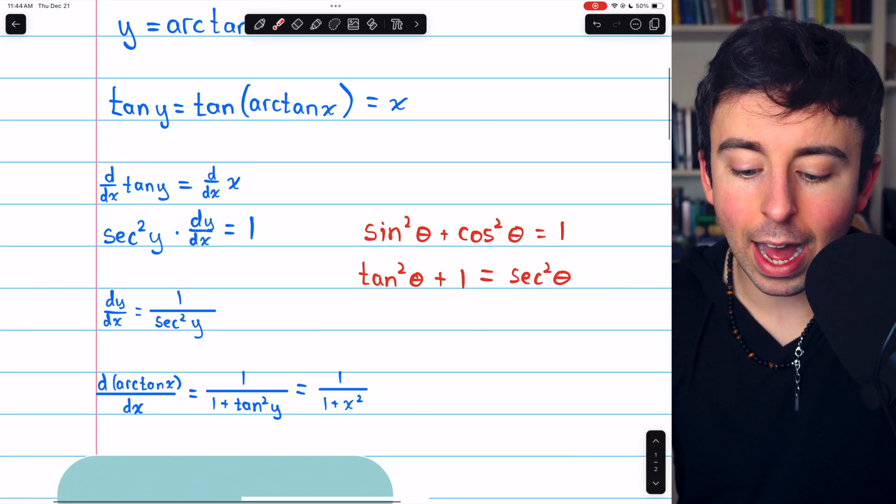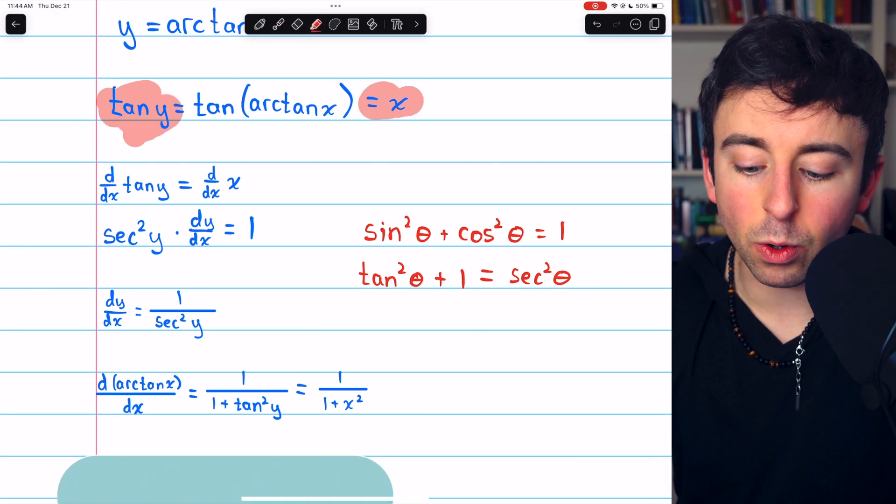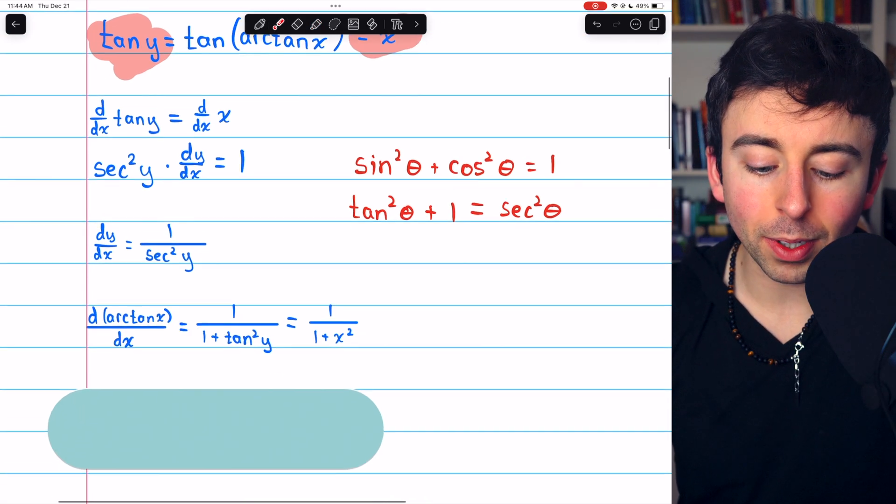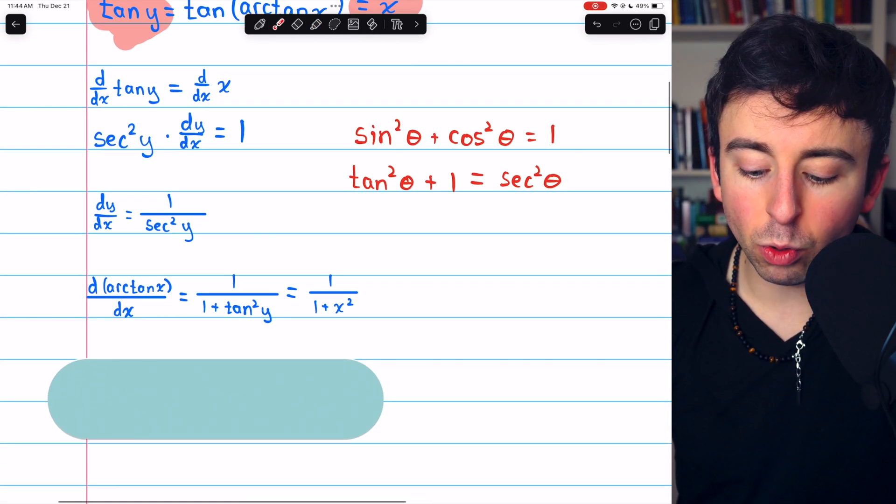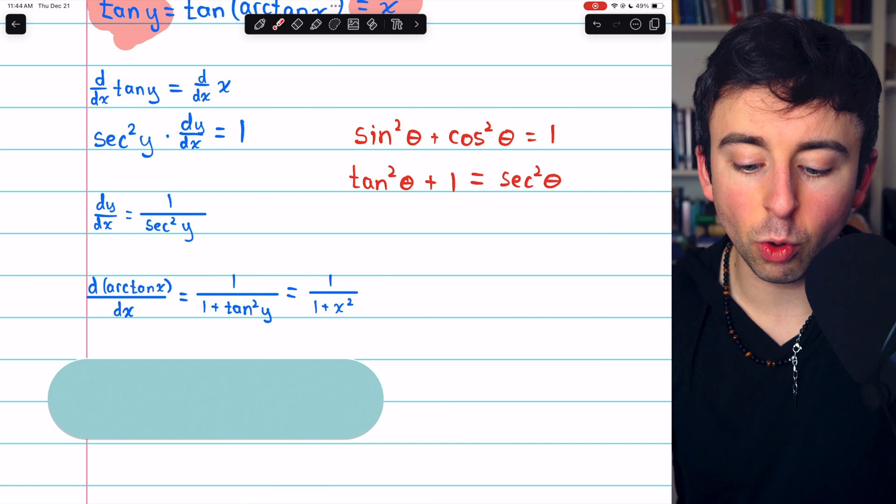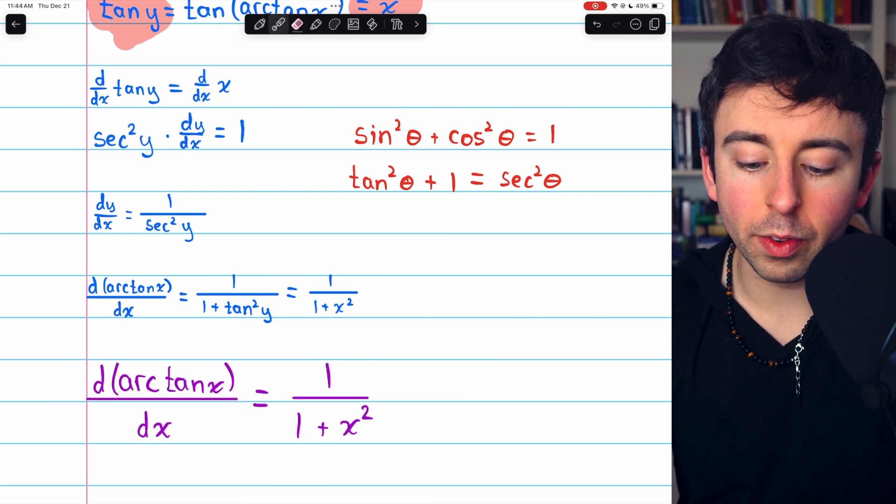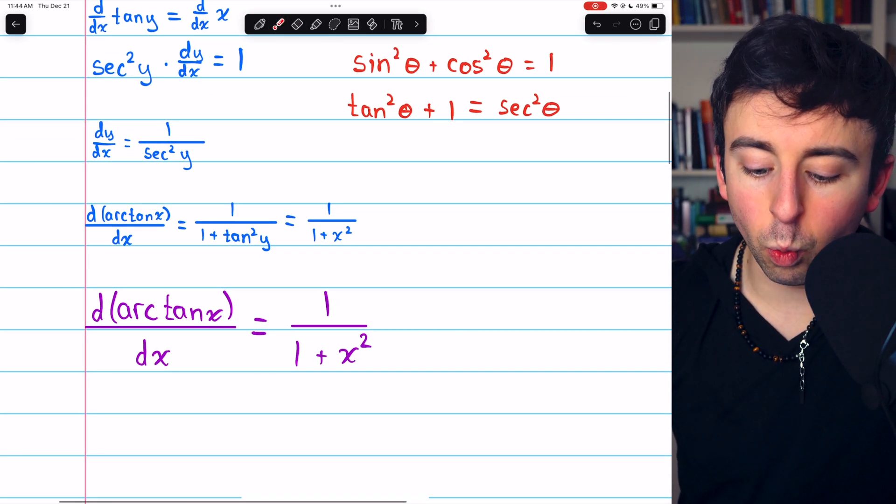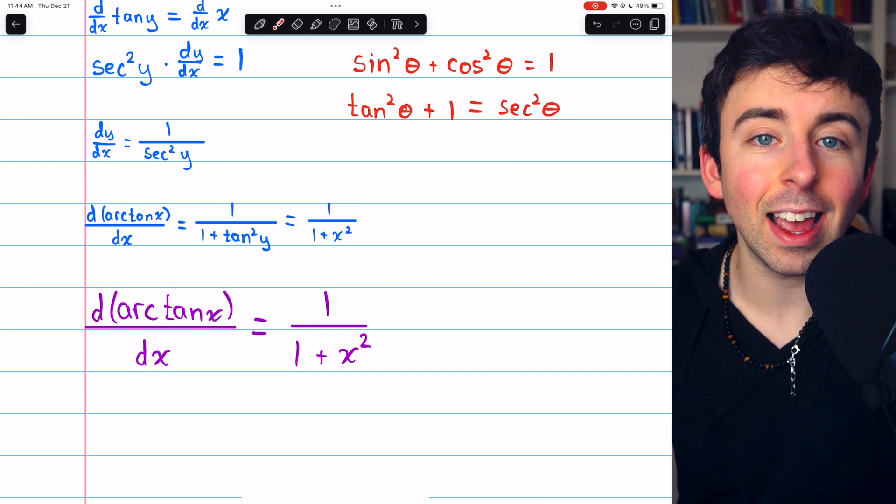But remember, tangent of y, we already figured out, is equal to x. So 1 plus tangent squared y is 1 plus x squared. Thus, we have the derivative of arctan x. It's 1 over 1 plus x squared.